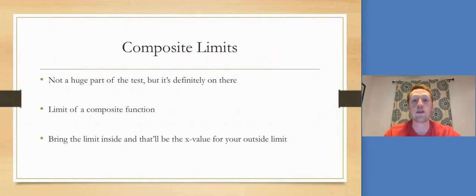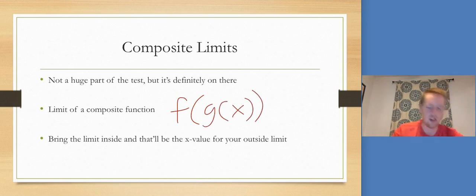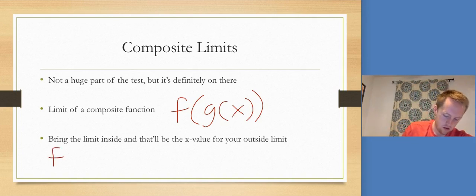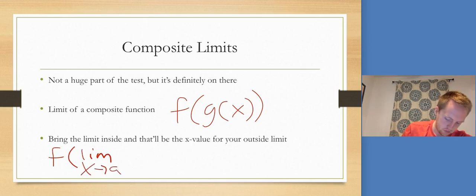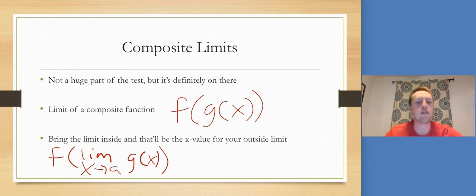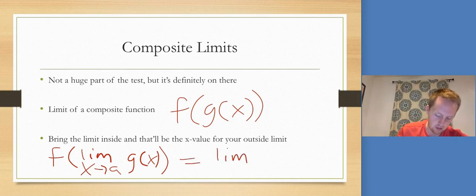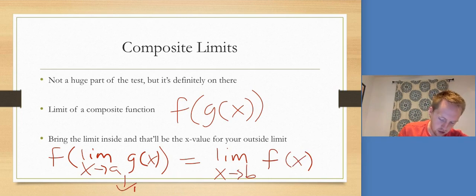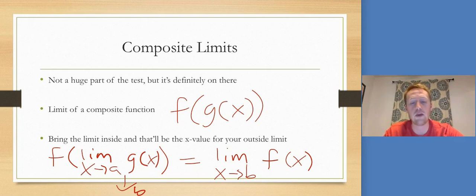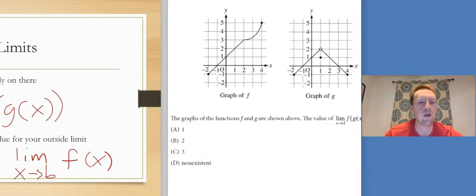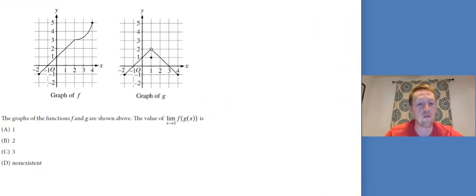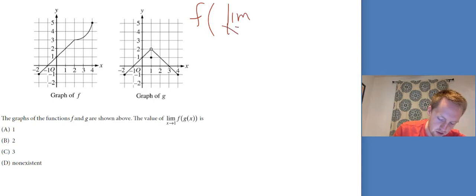Let's talk about composite limits. It's when we take the limit of a composite function, like f of g of x. What we're going to do is bring the limit inside, like this: limit as x goes to a of f of g of x becomes f of the limit as x goes to a of g of x. If the limit as x goes to a for g of x is b, then this turns into the limit as x goes to b for just f of x.